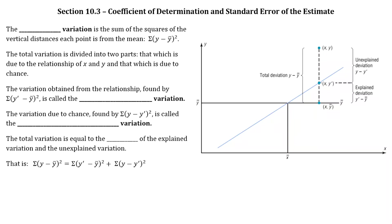Today we're going to look at section 10.3. There's really not a whole lot of information in this section — it's really just the conclusion of the regression analysis we were doing in section 10.2. Our main goal is to learn how to calculate a prediction interval. But before we get to that, let's jot down some vocabulary regarding how and why the regression line varies from the actual data points on the scatterplot and why that variation might have occurred.